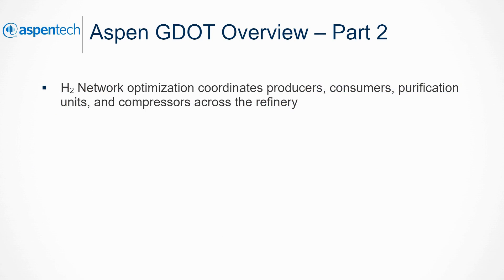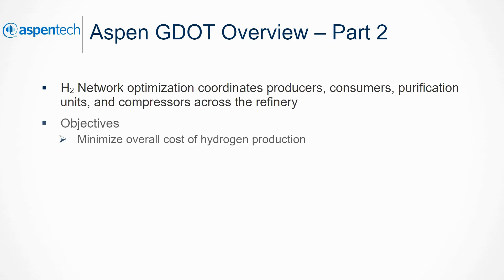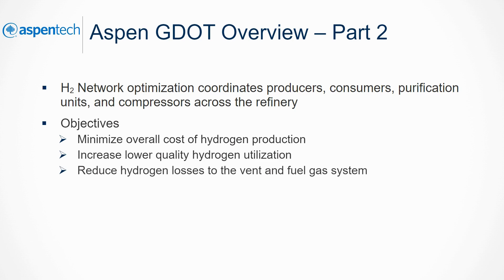A fourth refinery application for GDOT is optimization of a hydrogen network. In this application, GDOT coordinates producers and consumers of hydrogen, purification units, and compressors across the refinery. In this mode, GDOT minimizes the overall cost of hydrogen production, increases lower-quality hydrogen utilization, and reduces hydrogen losses to the vent and fuel gas system, and minimizes losses from purification units.